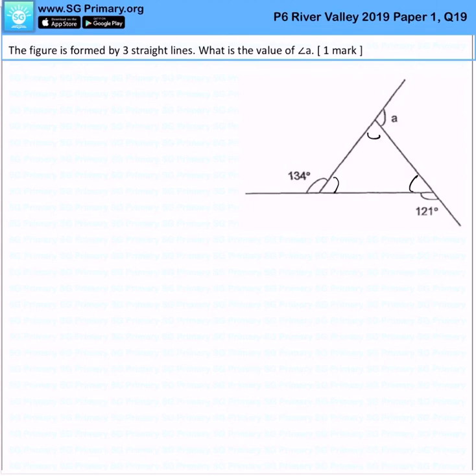I will take 180 minus 134 degrees, giving me 46 degrees. This will be 46 degrees. On the right side, I will take 180 degrees minus 121 degrees and I get 59 degrees.